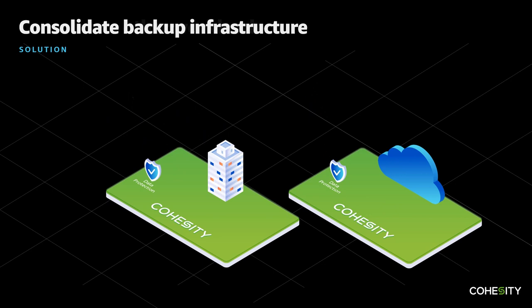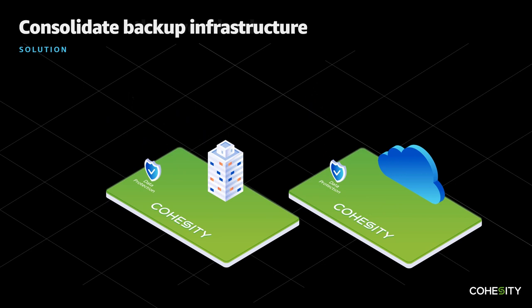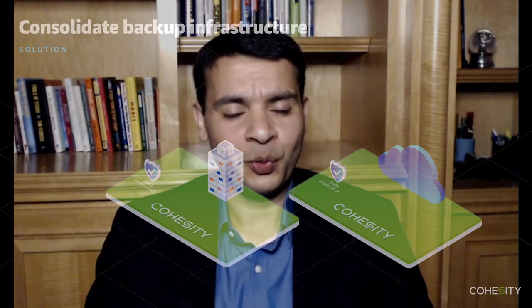What we do is we have built a hyperscale software platform, both for on-premises — shown on the left — as well as for the cloud, shown on the right. And as a first step, we eliminate that complicated enterprise backup platform in the legacy world and consolidate all of that on Cohesity. And once we've simplified our customers' backup environment in this way, we start looking at what else we can do.